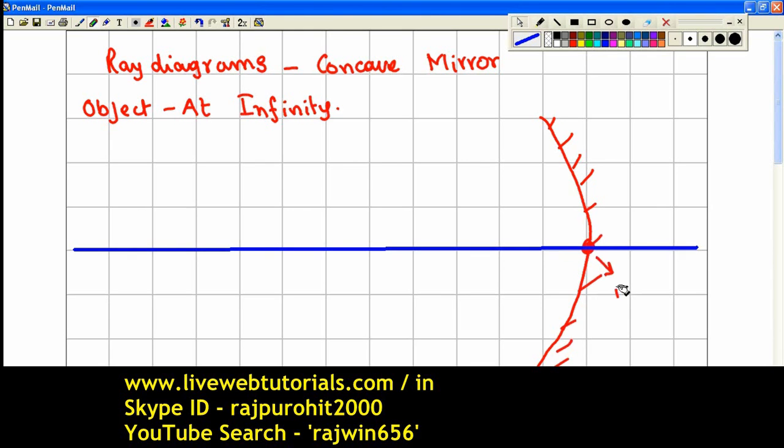Now from this point which is going to be known as the pole of the mirror, that is the center of the mirror, I am going to mark a point over here which is 3 cm and another point which is going to be 6 cm.